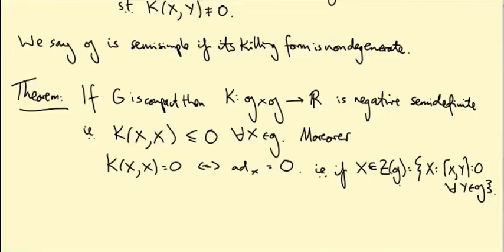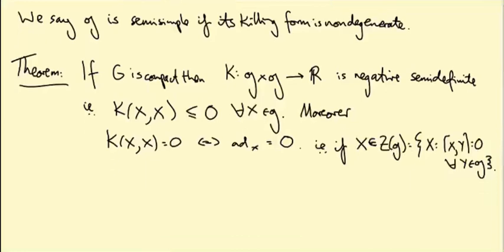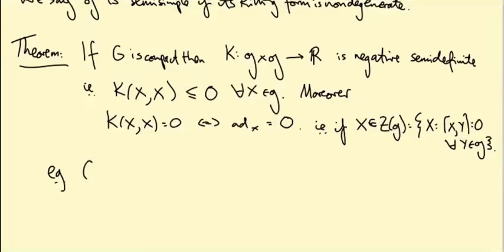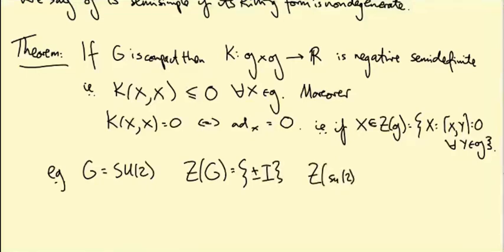So you may have come across the center of a group, the set of things that commute with everything in the group. This is the center of the Lie algebra, the set of things that commute with everything in the Lie algebra. It's not necessarily true that if your Lie algebra has trivial center, then the group has trivial center. For example, take G to be SU(2), then the center of the group is plus or minus the identity matrix. There's a non-trivial element, namely minus the identity that commutes with everything. But the center of the Lie algebra, little su(2), is zero. You can check. The only thing that commutes with everything in the Lie algebra is the zero matrix.